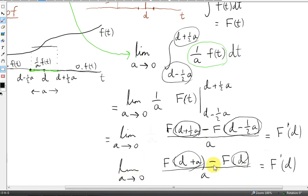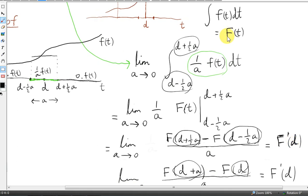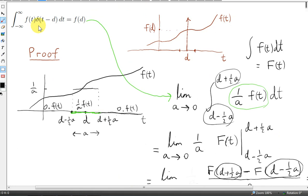Anyway, both of these give us the derivative of big F(t) at t equals d. But we know that the derivative of big F(t) is little f(t). So the derivative of big F at d is just little f at d. So that's the proof of the sifting property.